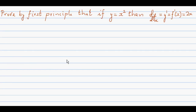Prove by first principle that if y is equal to x squared, then dy/dx — or y dash, or f dash x — is equal to 2x. These all mean one and the same thing. The simplest form is: if y is equal to x squared, the gradient at any point can be given by the function 2x.